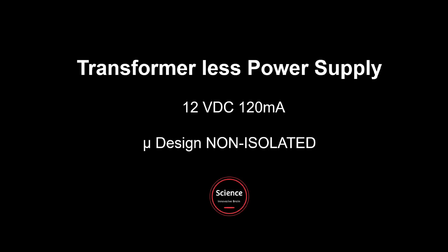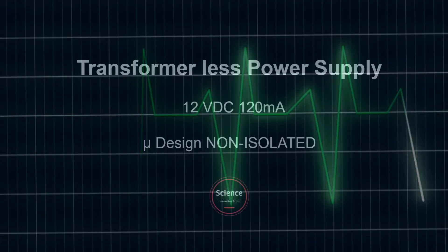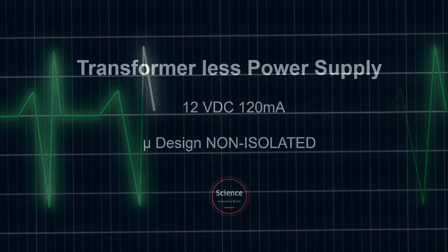Welcome to Science Innovative Brain. In today's video lecture, we will learn about a transformer-less power supply: 12V DC, 120mA. It is a very small and efficient design with non-isolated topology.